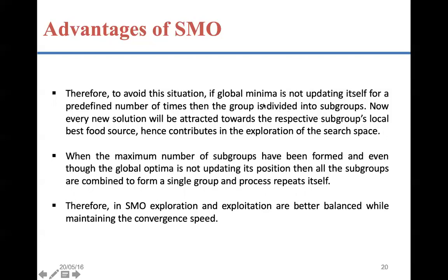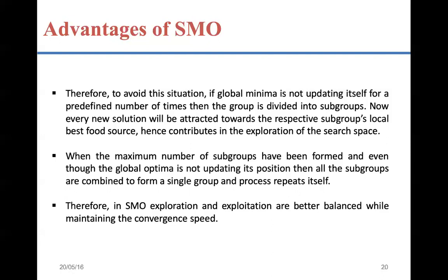If the global minimum is not updated for a predefined number of steps, the group is divided into subgroups — the global leader decision phase (GLD phase) is applied. Every new solution is attracted towards its respective smaller group, and exploration of the search space begins. When the maximum number of subgroups are formed and the global optimum is still not updated, the fusion process starts and all smaller groups merge into a single group. Therefore, in SMO, exploration and exploitation are better balanced while maintaining convergence speed — that is the unique characteristic of Spider Monkey Optimization.